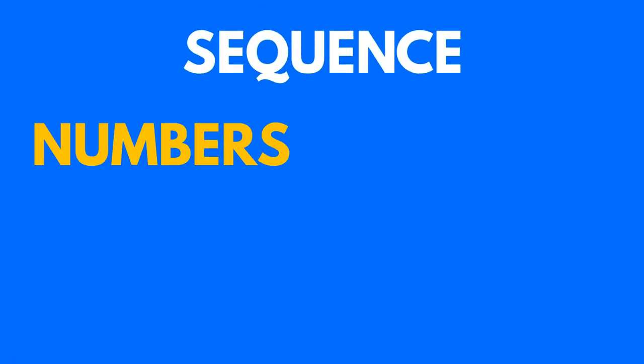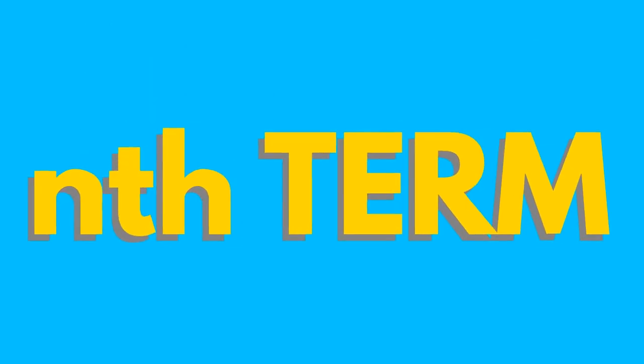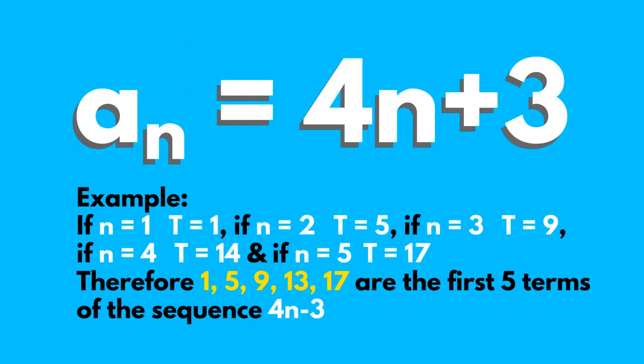A sequence is a set of numbers or elements, each called a term. They are connected by a rule known as the nth term. This is a formula that includes an n. It can give us every term in a sequence when we put different values for n in it.